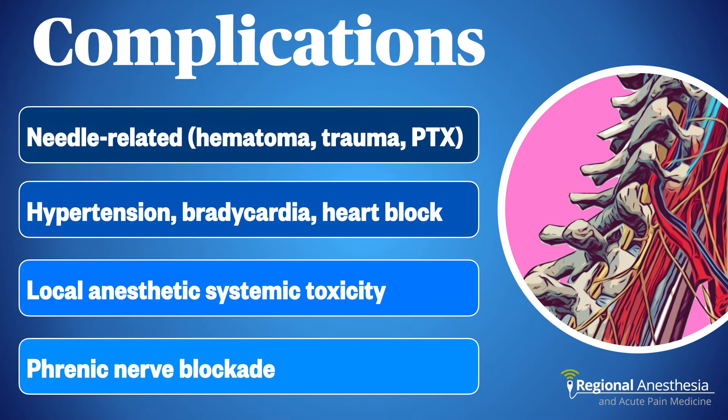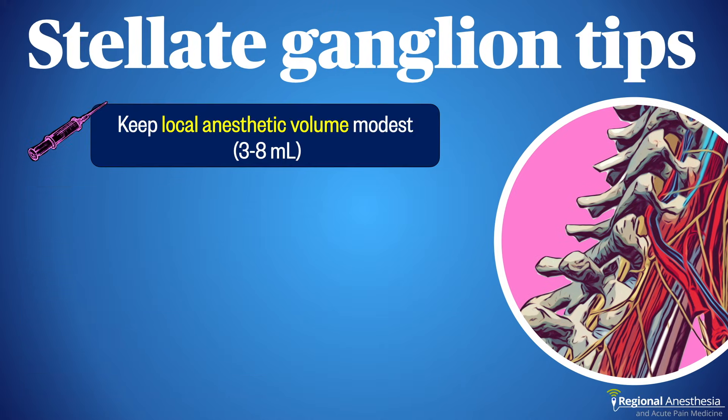LAST (local anesthetic systemic toxicity) is always a concern, as only one or two mils of local anesthetic in the vertebral artery is all you need to provoke a seizure. The phrenic nerve is nearby on the surface of the anterior scalene muscle; large-volume injection may result in phrenic blockade and dyspnea from diaphragmatic hemiparesis. Because of this, bilateral stellate ganglion block should only be undertaken with great care and monitoring.